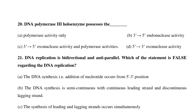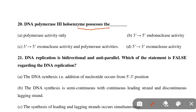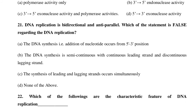Next MCQ: DNA polymerase III holoenzyme possesses — Option A: polymerase activity only, Option B: 3' to 5' endonuclease activity, Option C: 3' to 5' exonuclease activity and polymerase activity, Option D: 5' to 3' exonuclease activity. Option C is correct — 3' to 5' exonuclease activity and polymerase activity.